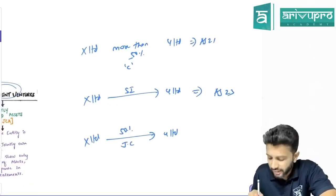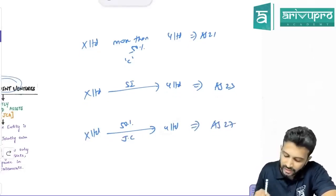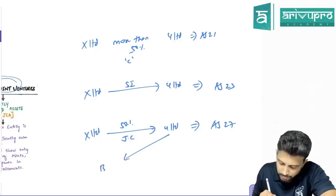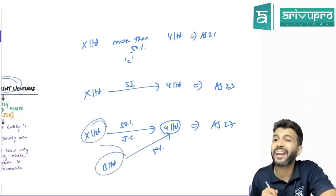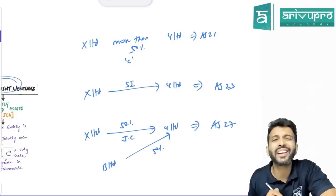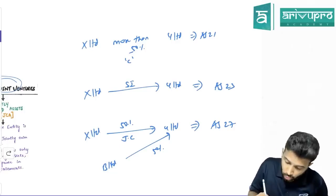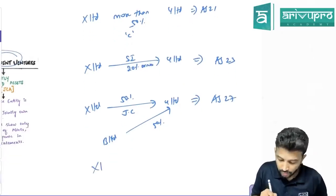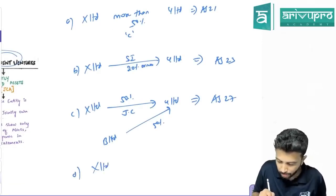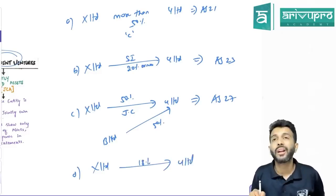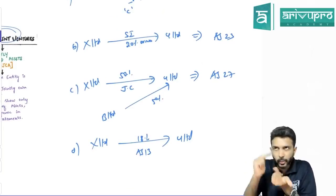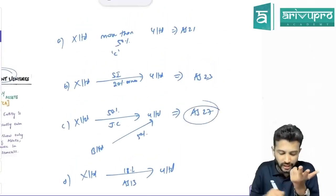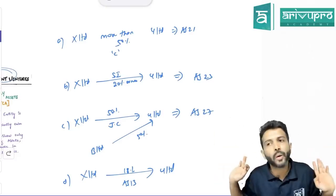In a joint control scenario, you apply AS 27. So if X Limited has 50 percent in Y Limited, there will be another party — say B Limited — who also has 50 percent, meaning Y Limited is jointly controlled by X and B Limited. To summarize: up to less than 20 percent is AS 30 (normal investment); 20 percent or more (significant influence) is AS 23; exactly 50 percent is AS 27; more than 50 percent is AS 21.